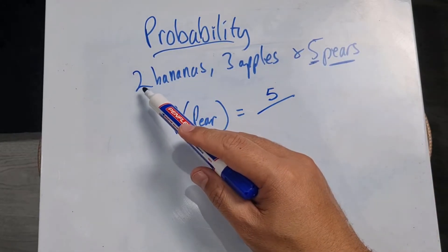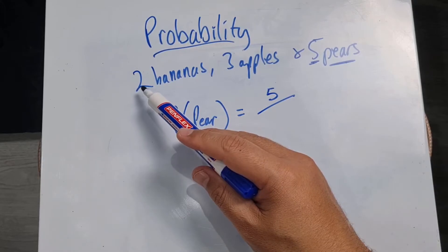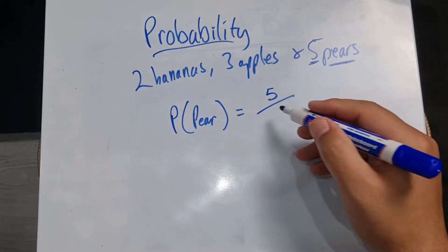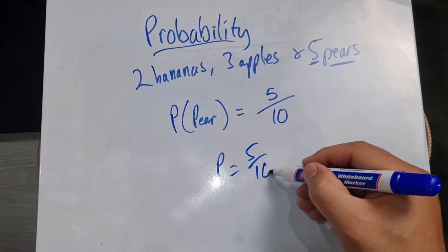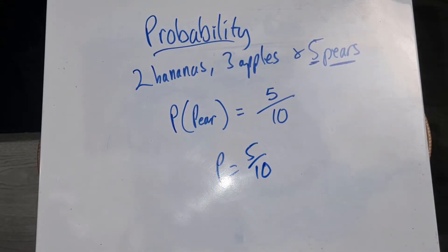and that's again, remember, the total number of possible outcomes: two, three, five, that's 10. So my probability is a five in 10 chance. It's basically a 50% chance.